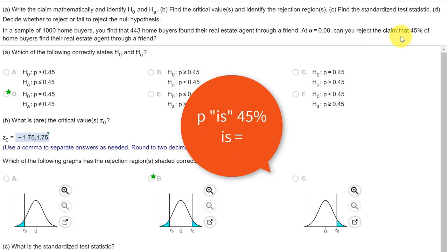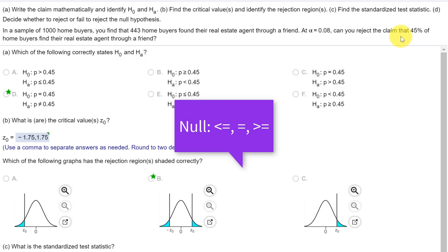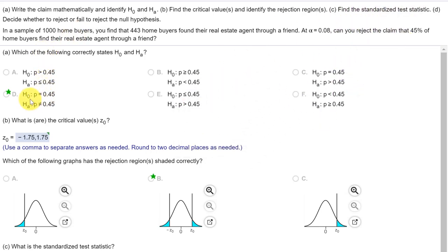So the proportion is 45% tells us this is an equality. And since the claim is an equality it must be the null. And if we look down here we find this is the option there. The null, the population proportion P is equal to 45%, and the alternative is the complement, not equal to 45%.